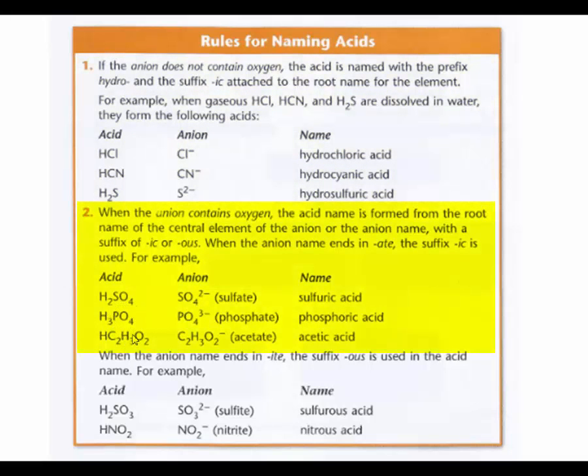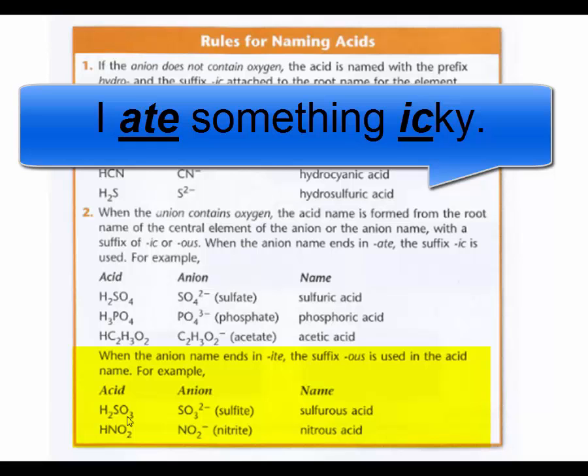Notice these ones have oxygen anions in them, so they don't get a hydro. And so I just have to call it based on the anion. You've got to be careful of the anion. This is the sulfate ion, so I call it sulfuric acid. Down here we've got the sulfite ion, I-T-E ending, and the ites get ous for acid. So this is sulfurous acid. There's a little mnemonic you can remember: I ate something icky. If the oxy anion ends in ate, the acid ends in ick. Phosphate, phosphoric.